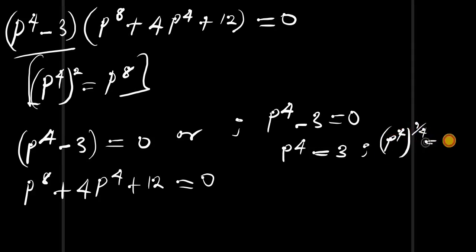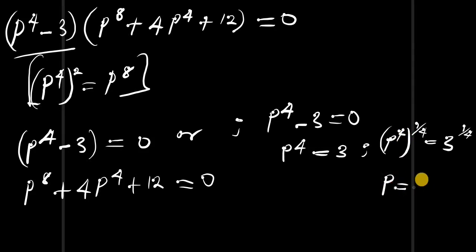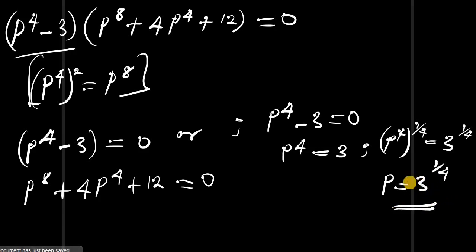If p to the power of 4 equals 3, we raise both sides to the power of 1 over 4. We get p to the power of 4 times 1/4 equals 3 to the power of 1/4. The 4 cancels, so p equals 3 to the power of 1 over 4. This is one of the solutions for p.